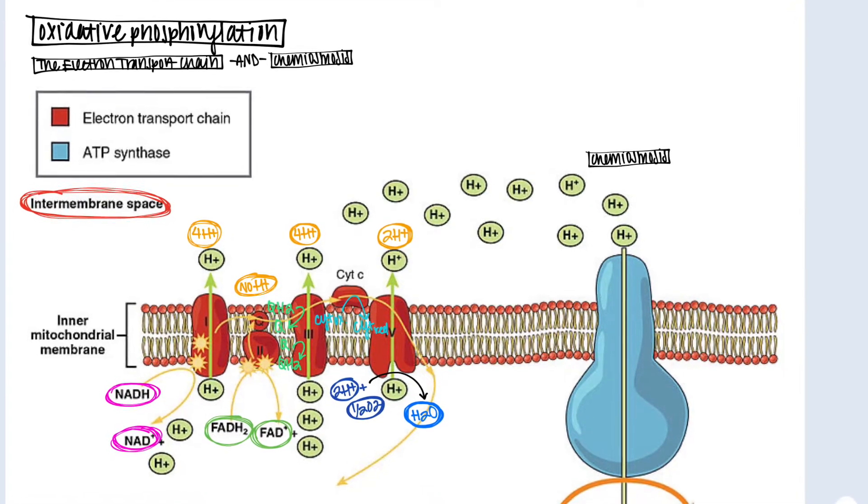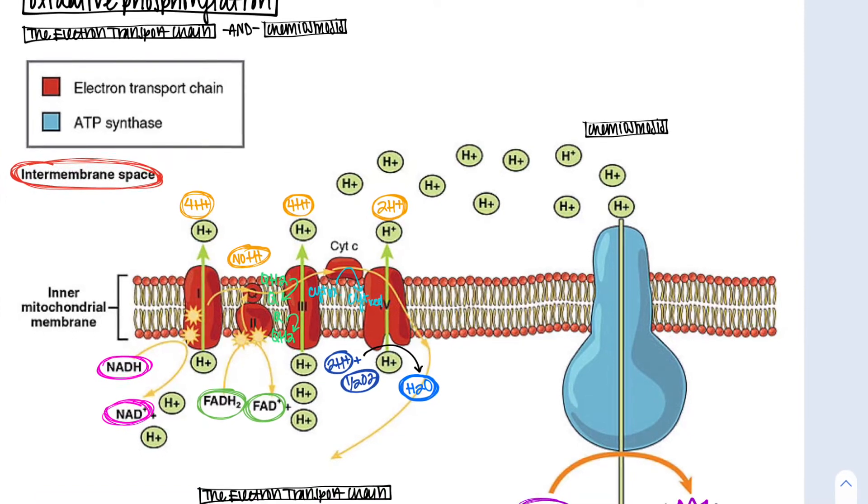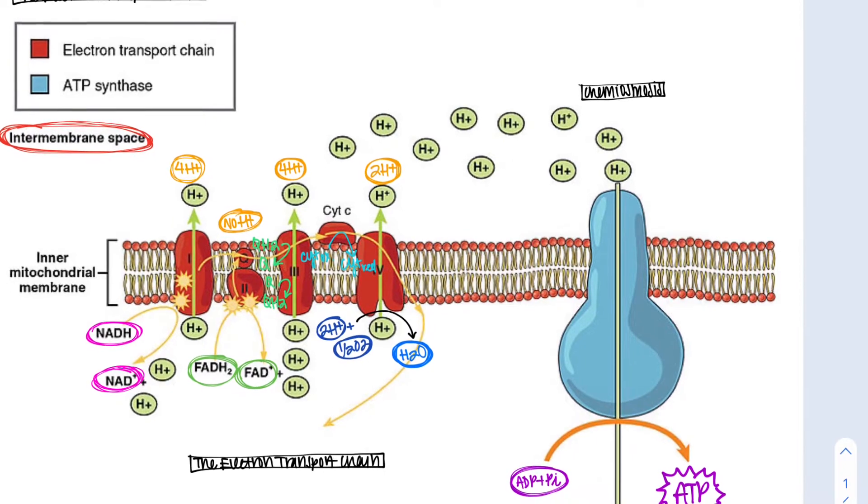Oxidative phosphorylation, or oxfos, describes the metabolic processes that generate ATP for energy. This umbrella term refers to the electron transport chain and chemiosmosis.